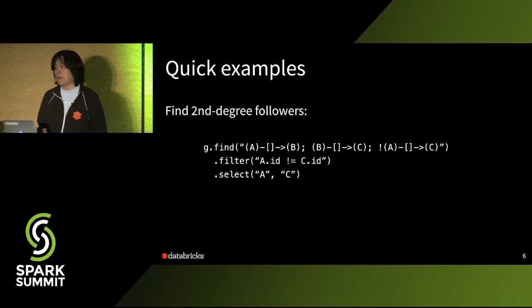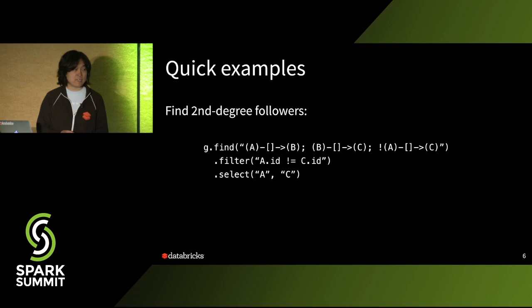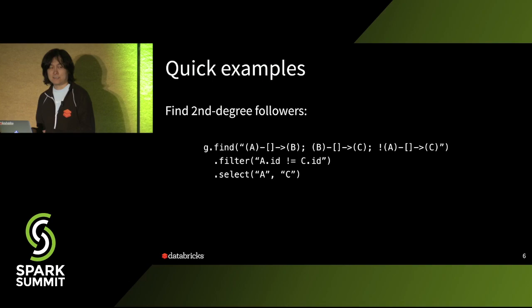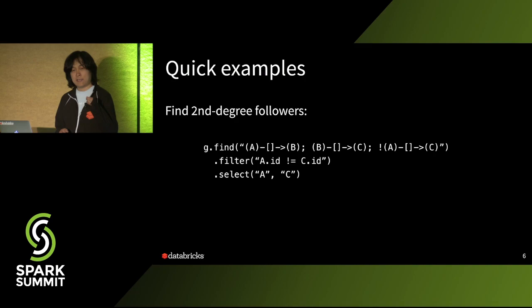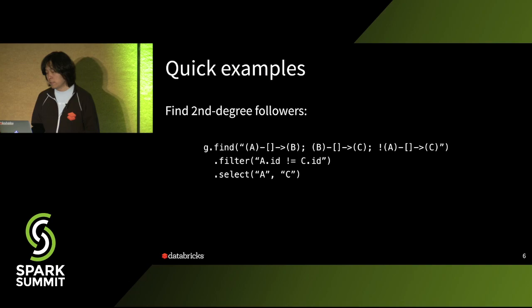Another example is doing graph queries. GraphX only handles batch use cases and batch algorithms. With GraphFrames we can easily say, for example, find the second-degree followers using a graph language. You say: find a pattern where A is following B, and B is following C, but A is not following C directly. You get a DataFrame with columns named A, B, C that match the pattern, and then you can do a filter — for example, filter out yourself from the second-degree followers — then select the second-degree followers and continue with other properties.